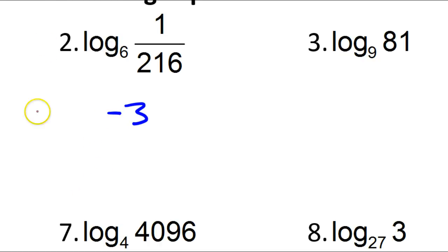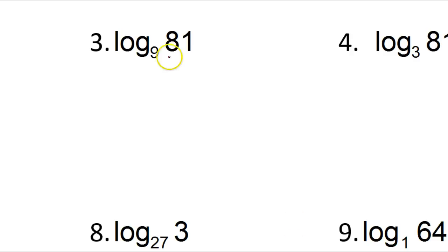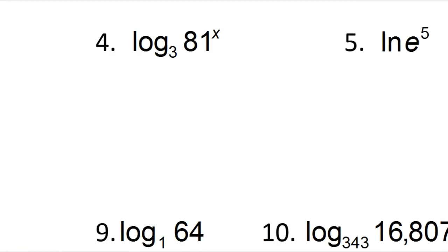One more time, I could check my answer. So I'm saying that this is the exponent that changes 6 into 1 over 216. If I do 6 to the negative 3 power, that's 1 over 6 to the third power. That is 1 over 216, which is what I wanted. Look at number 3. What exponent turns a 9 into an 81? That's the power of 2. 9 squared equals 81. So that's easy.